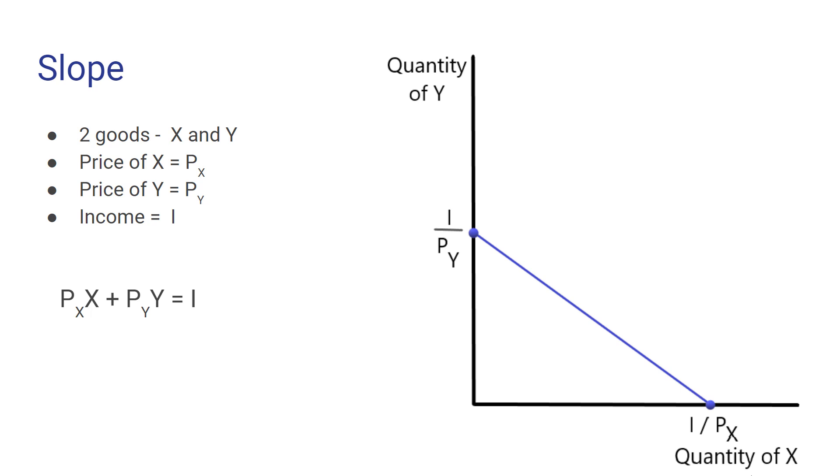We take the budget constraint, PxX plus PyY equals I, and we want to simplify that to solve it for Y. We can do that first by getting rid of the term involving X on the left-hand side by subtracting that from both sides. So now we have Py times Y equals negative Px times X plus I. The last step here in simplifying for Y is just dividing both sides through by Py. And when we do that, we end up with Y is equal to the negative of the ratio of the price of good X to the price of good Y times X plus income divided by the price of good Y.